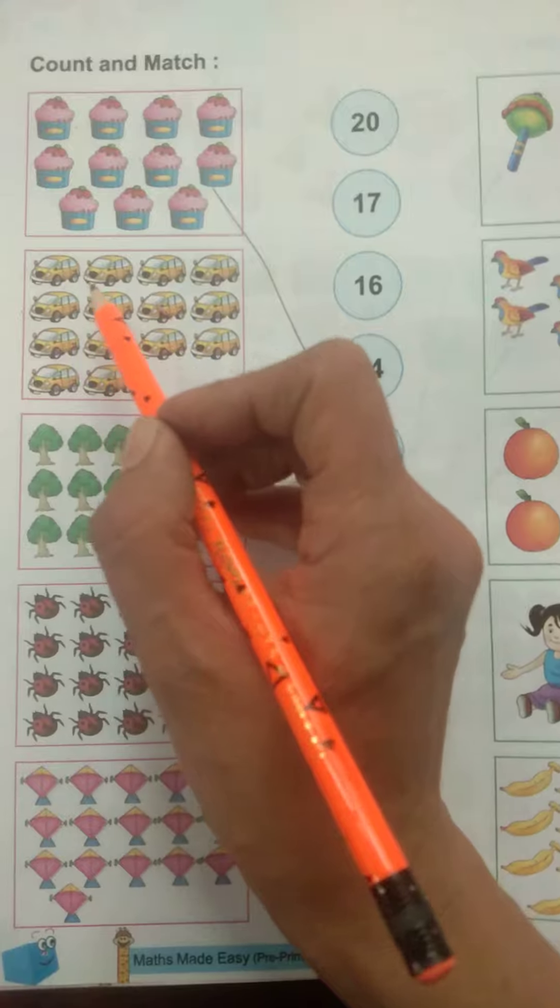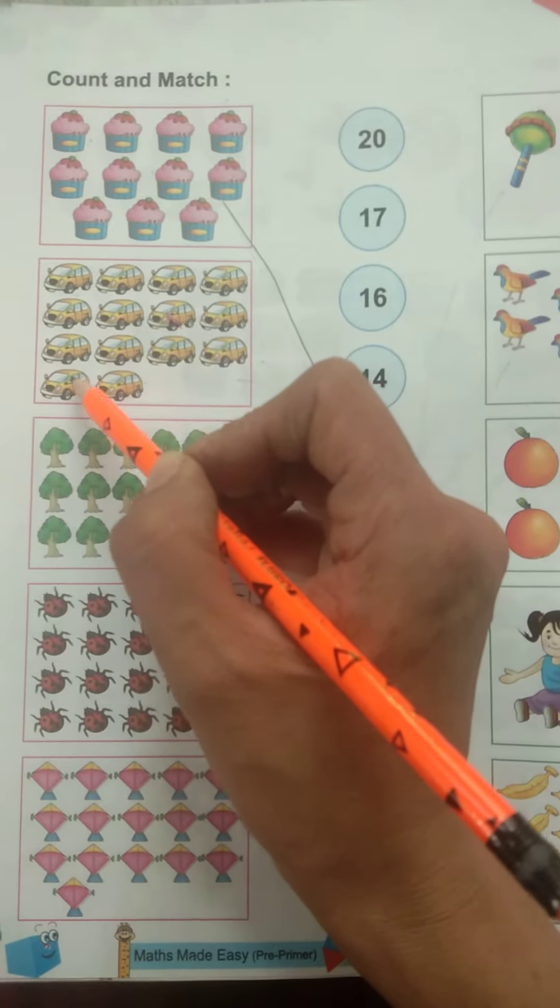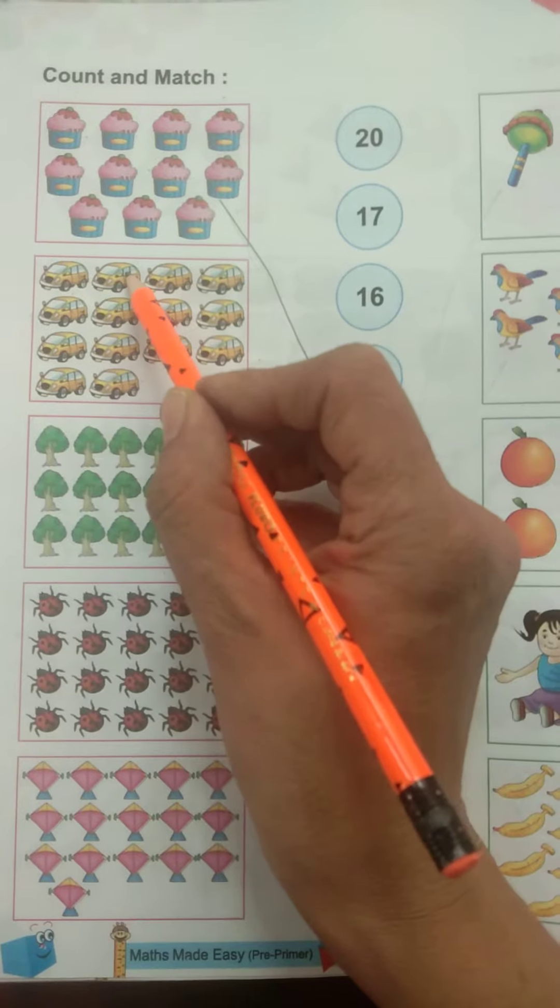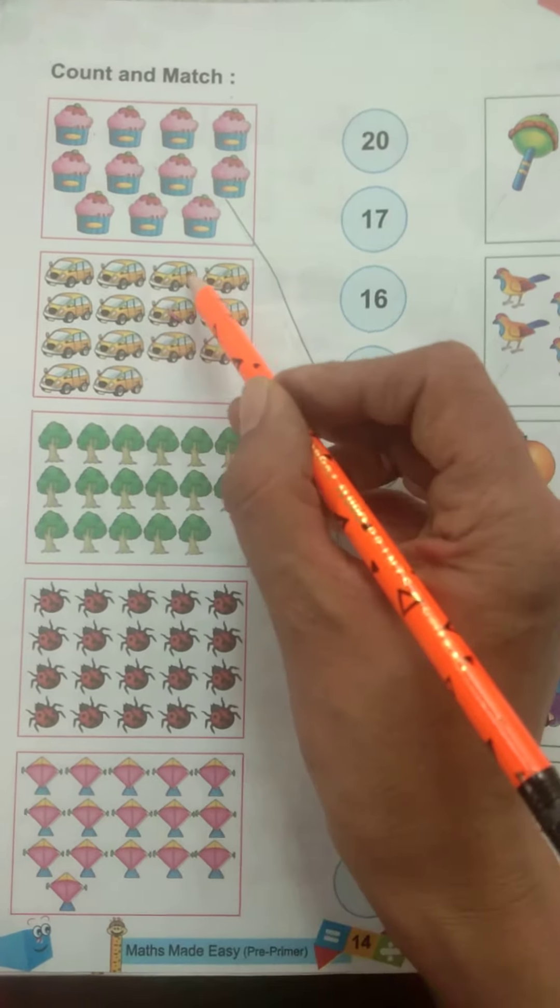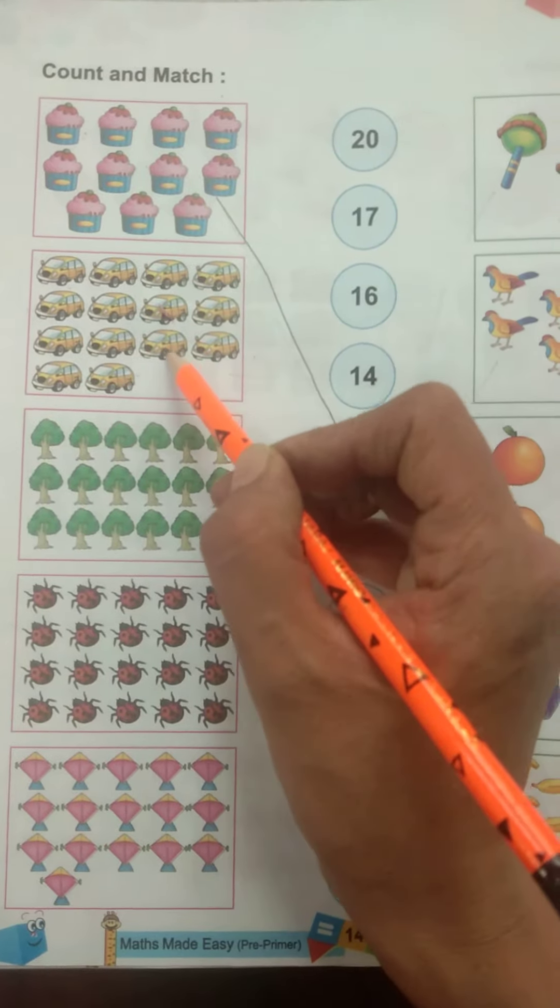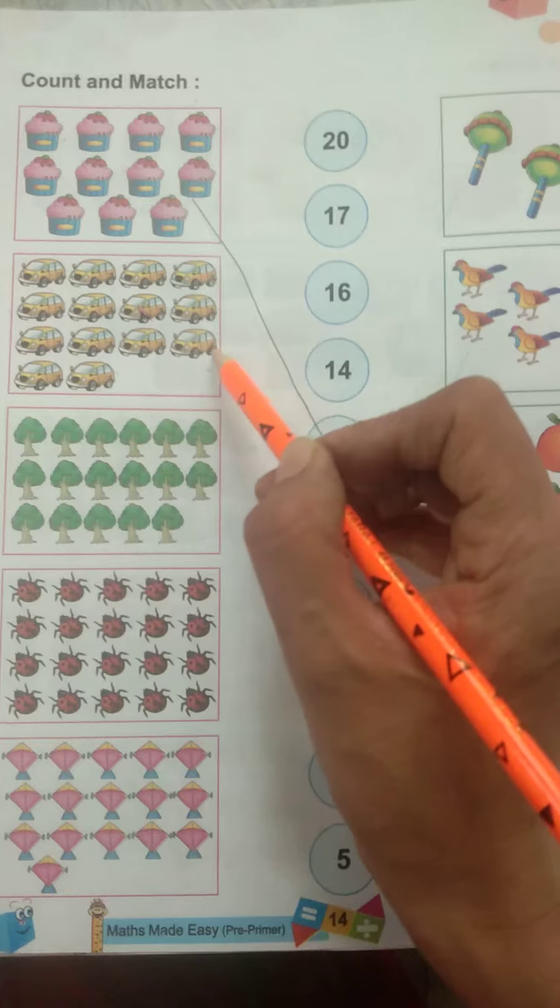Now count these cards. 1, 2, 3, 4, 5, 6, 7, 8, 9, 10, 11, 12, 13, 14.